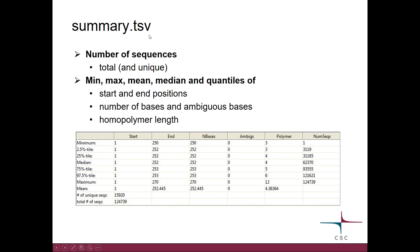Many of the mothur tools also give a summary file, which lists the number of sequences — and at a later stage of analysis it also indicates how many of those sequences are unique. It then lists the minimum, maximum, and median of various properties, for example the number of bases.